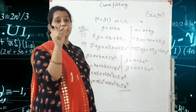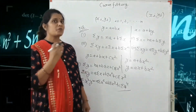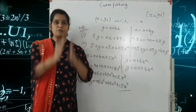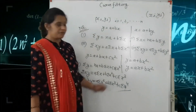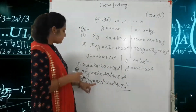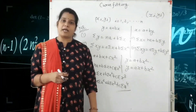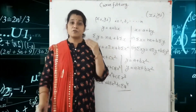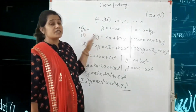When solving the quadratic equation for the best fit curve, the question is given only in terms of X and Y. So we need to find the values of summation X square, summation X cube, summation X to the power 4, summation XY, and summation X square Y. When making the table, first hide the summation sign — that means look at what column you need to compute, for example summation X square.